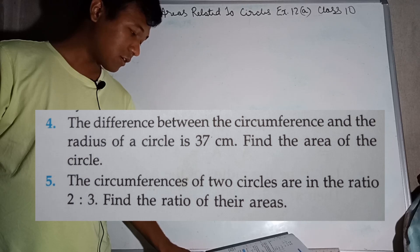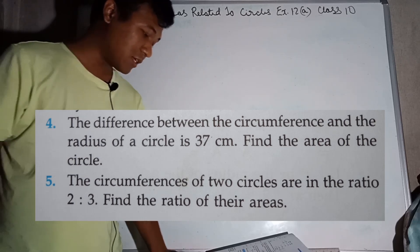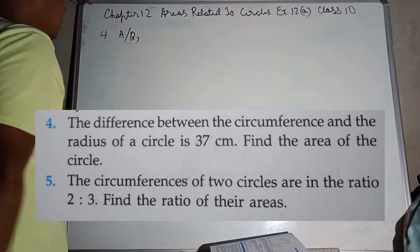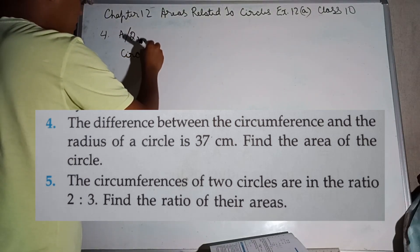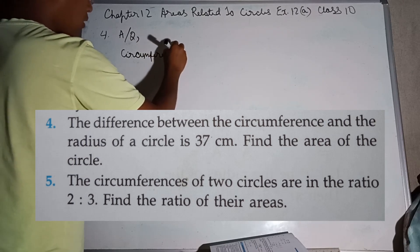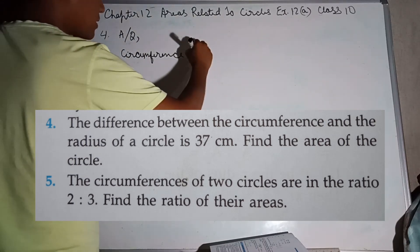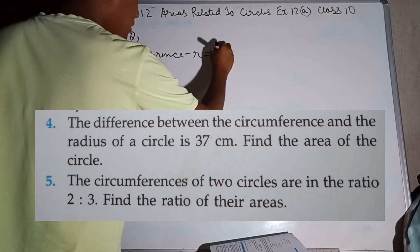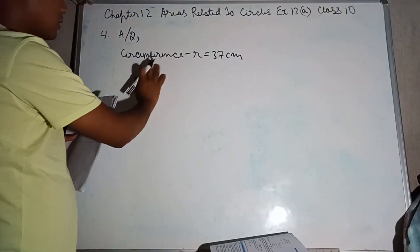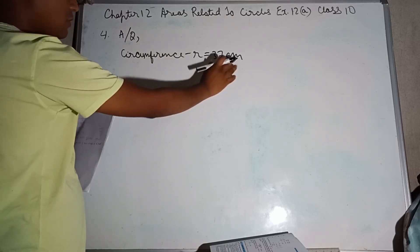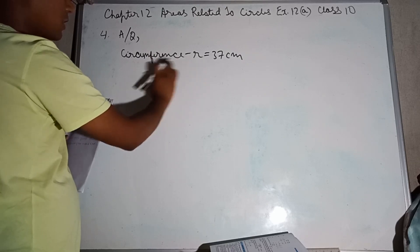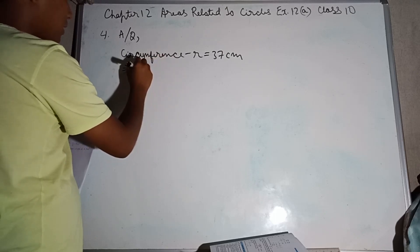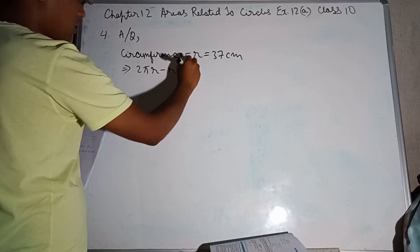Find the area of the circle. According to the question, circumference minus R equals 37 cm. So circumference minus radius is the difference. This implies circumference of the circle: 2πr minus r equals 37 cm.